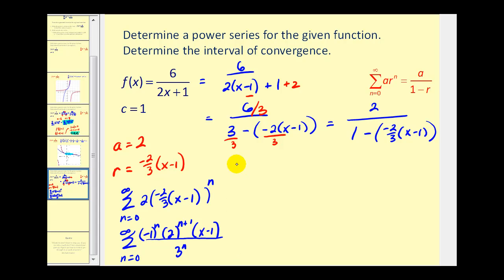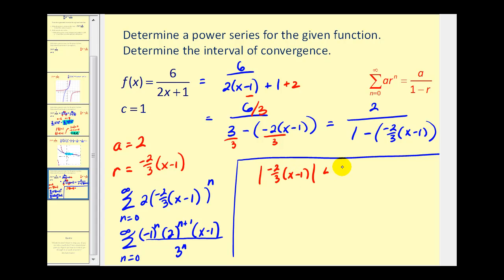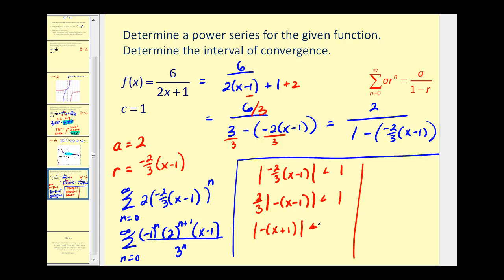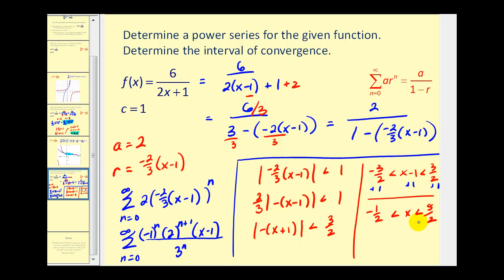To determine the interval of convergence, the absolute value of r must be less than one. The absolute value of negative two-thirds times the quantity x minus one must be less than one. Factoring out two-thirds and multiplying both sides by the reciprocal three-halves, the absolute value of x minus one must be less than three-halves. Adding one to both sides gives x greater than negative one-half and less than five-halves — the open interval from negative one-half to positive five-halves.